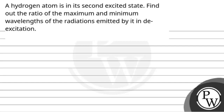Hello, let's read the question. A hydrogen atom is in its second excited state. Find the ratio of maximum and minimum wavelength of radiations emitted by it in the de-excitation state.